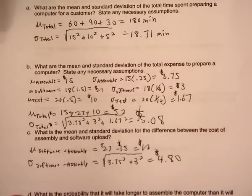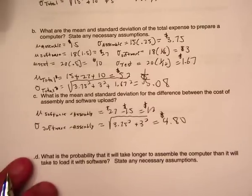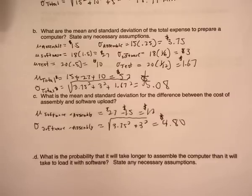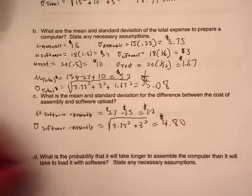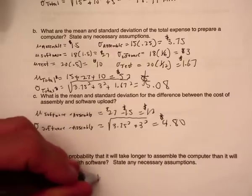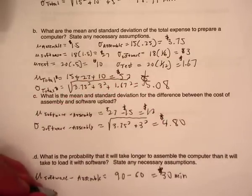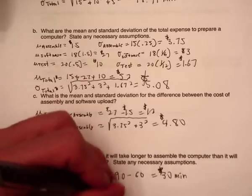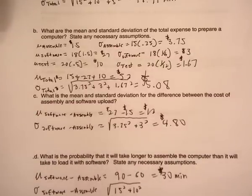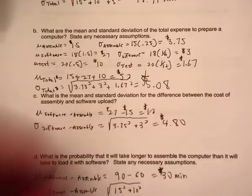Part D: what is the probability that it will take longer to assemble the computer than to load the software? Assembly takes on average 60 minutes and software takes on average 90 minutes. Looking at software minus assembly in time: 90 − 60 = 30 minutes, so on average software takes 30 minutes more. The standard deviation of that difference is √(15² + 10²) = 18.03 minutes.